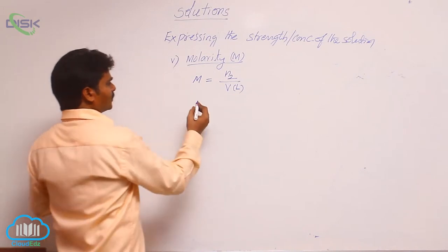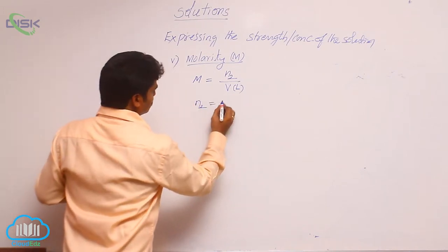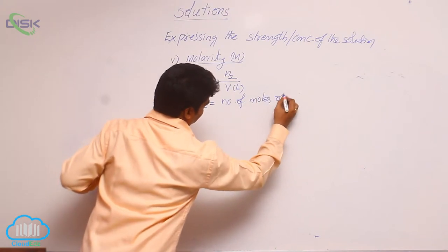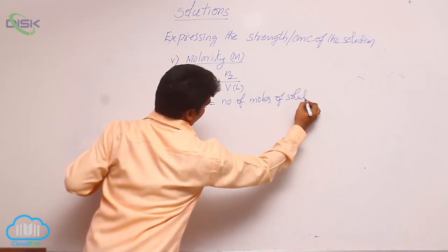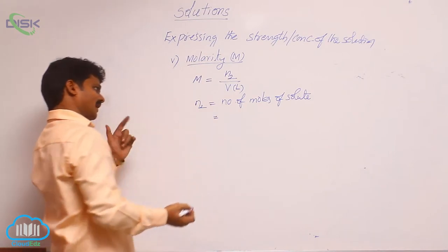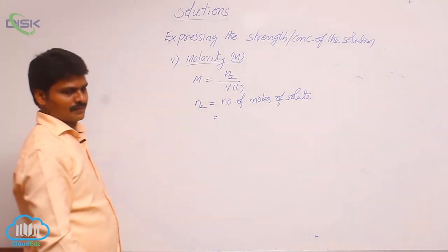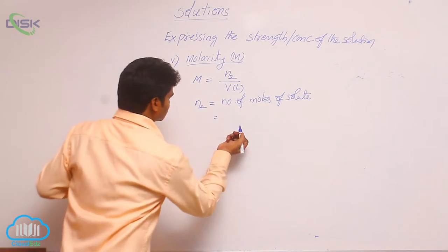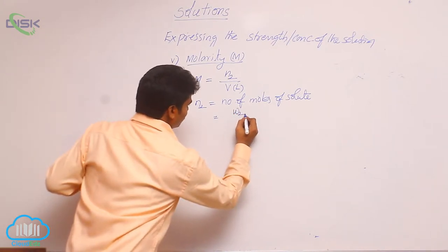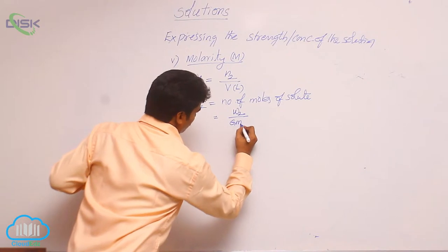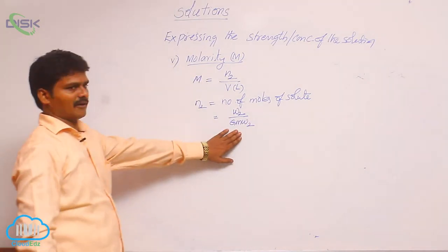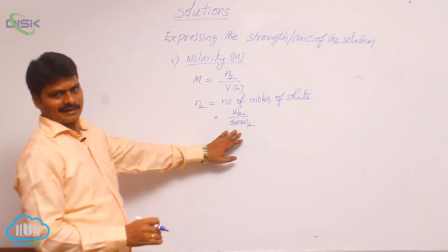What is n2 here? n2 means number of moles of solute. How to calculate number of moles? To calculate number of moles: weight of solute divided by gram molecular weight of solute. How to calculate gram molecular weight? From the formula itself, we calculate.